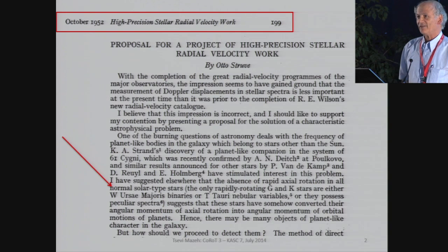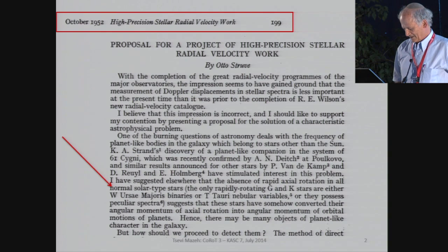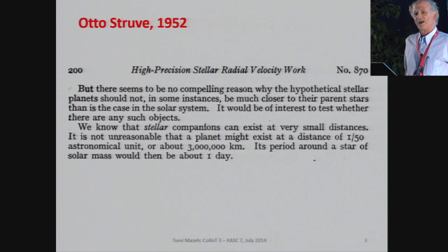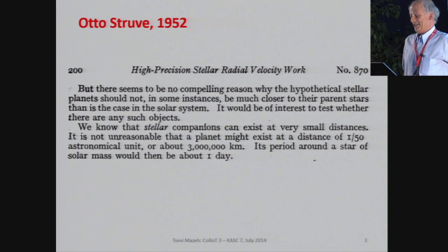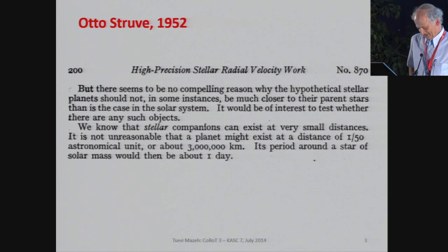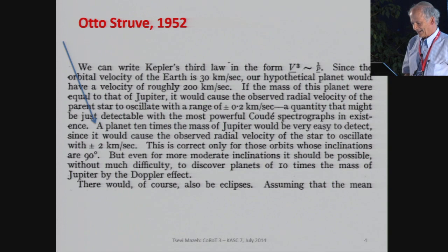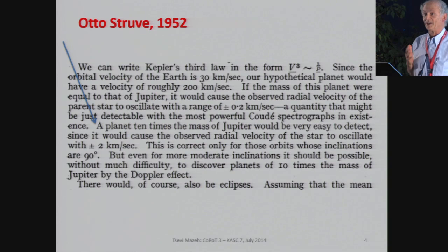It's amazing. He continues and suggests how we can detect those planets. First, he says there's no reason why we would not have a planet with a one-day period. When I started searching for planets in the 80s, we could only detect short-period planets and had trouble getting time because people told us giant planets are only at 5 AU in 12 years. So this is amazing — I thought I had this idea, but Otto Struve was much before me. Besides, he says a planet 10 times the mass of Jupiter would be very easy to detect — that's exactly what we detected at the beginning with HD 114762. It is an amazing paper.